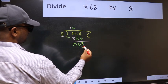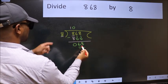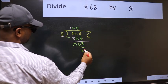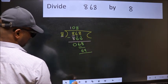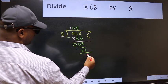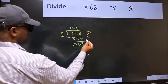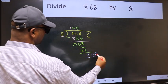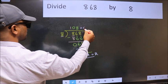Now 68. A number close to 68 in the 8 table is 8 times 8 equals 64. Now we should subtract. We get 4. No more numbers to bring down, so we stop here. This is our remainder, and this is our quotient.